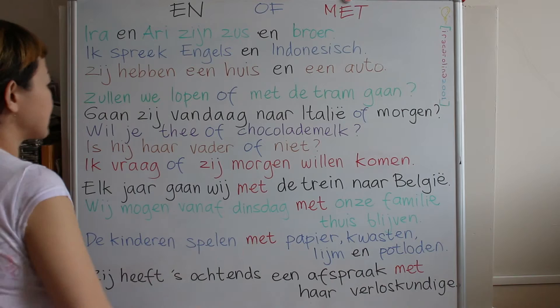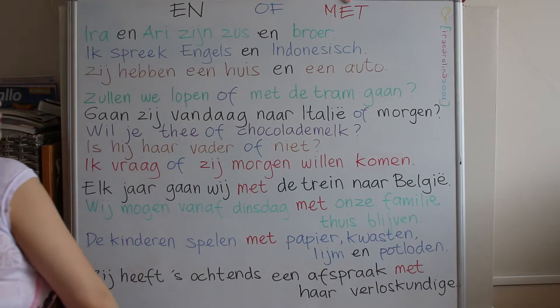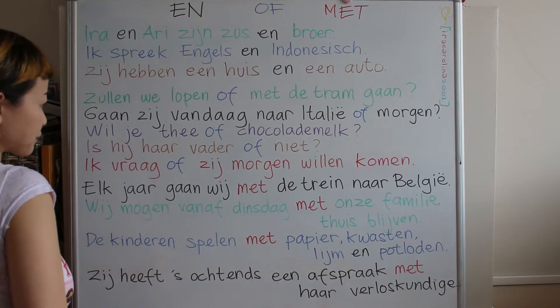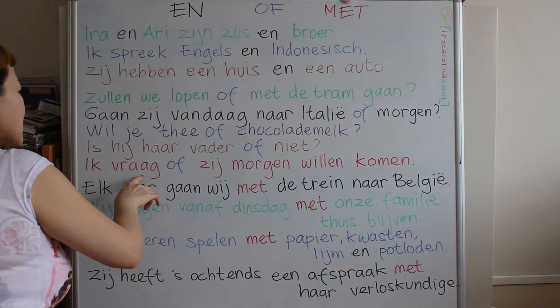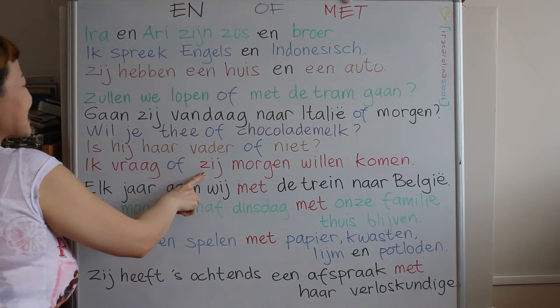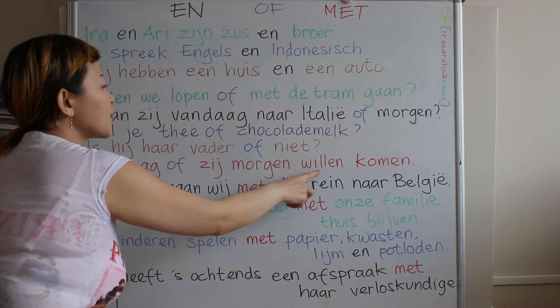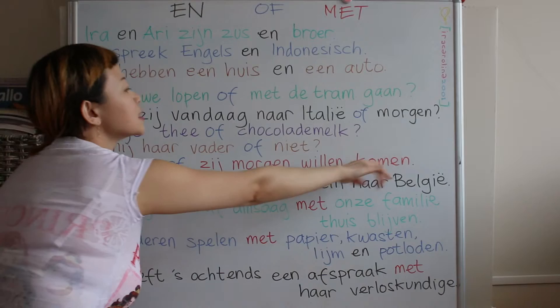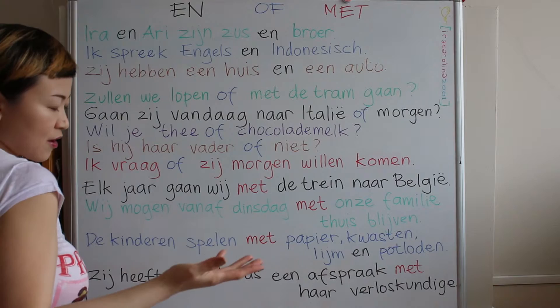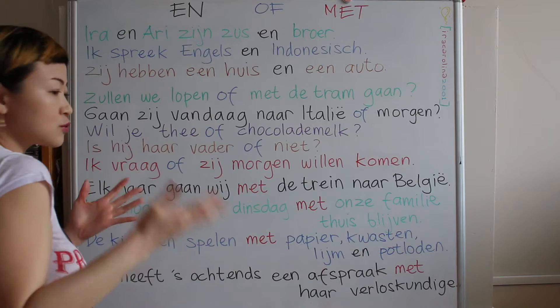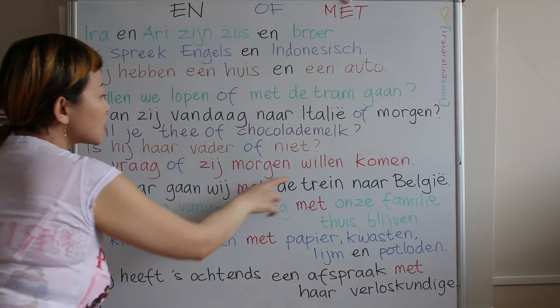'Ik vraag' means 'I ask'. In this case, 'of' means 'if', because from the sentence you see that 'ik vraag of' means 'I ask if'. 'Ik vraag of zij morgen willen komen' — I ask if they want to come tomorrow. So 'of' here means 'if', not 'or'.